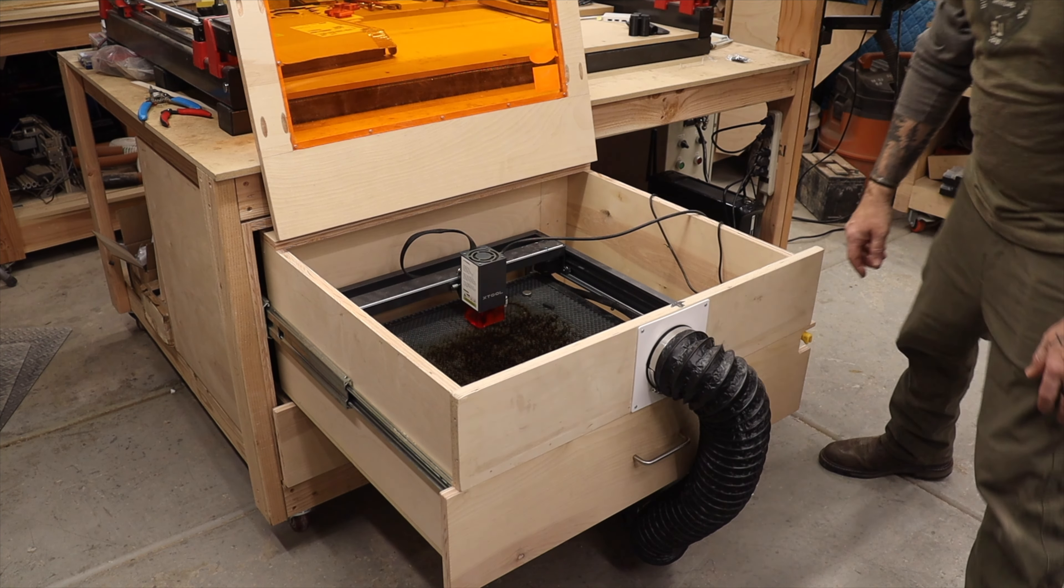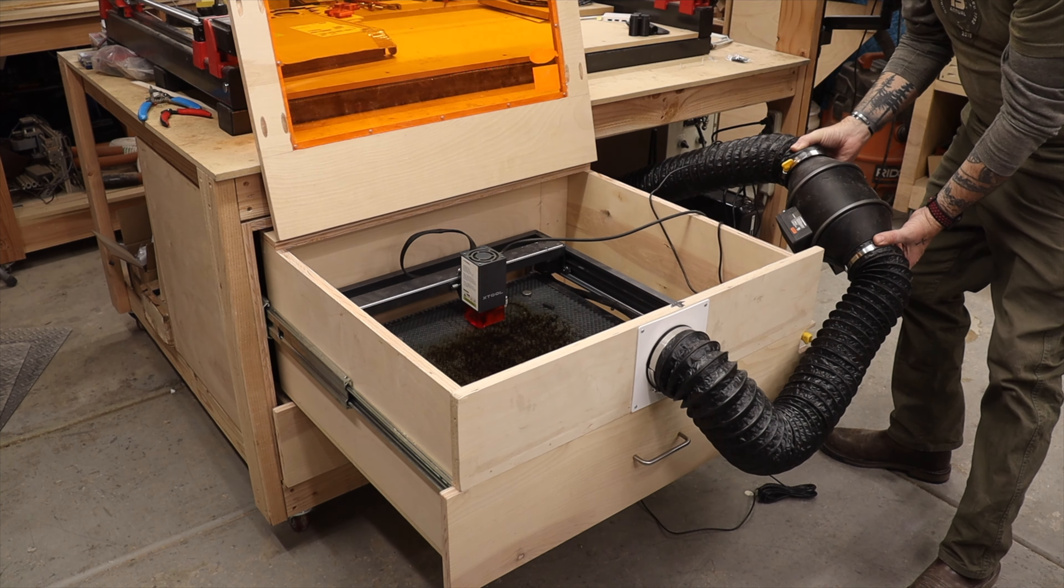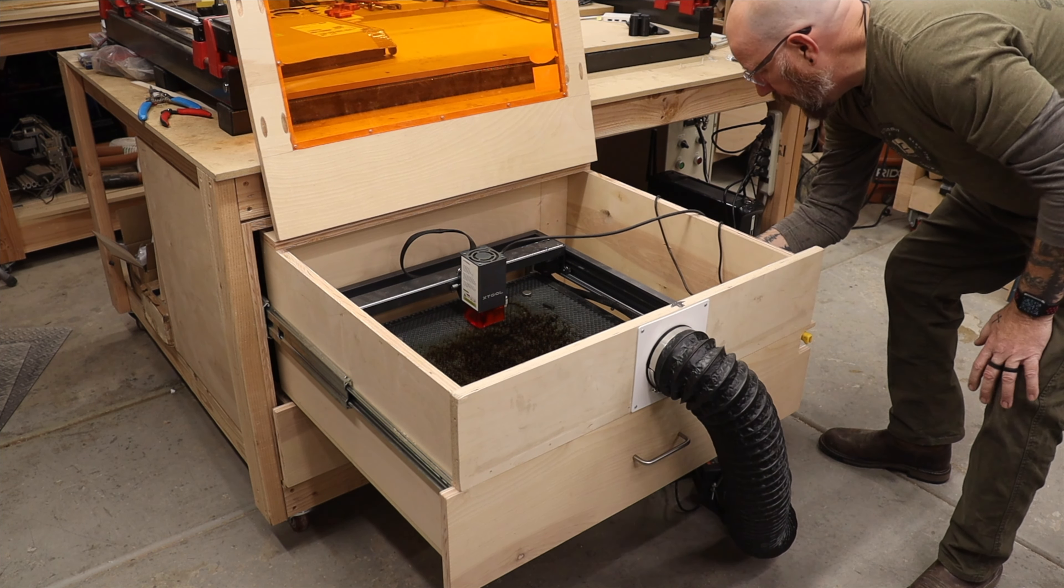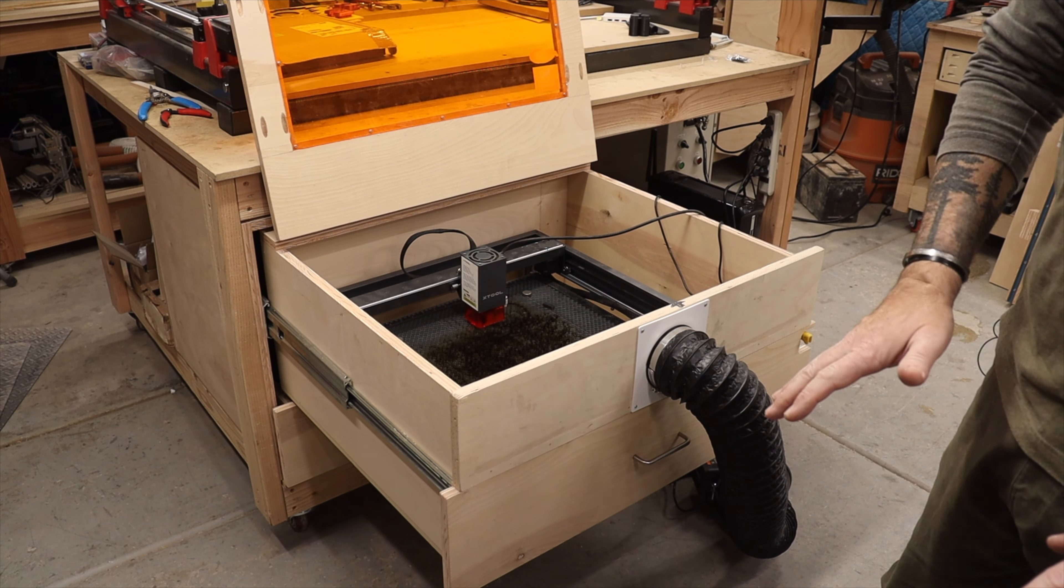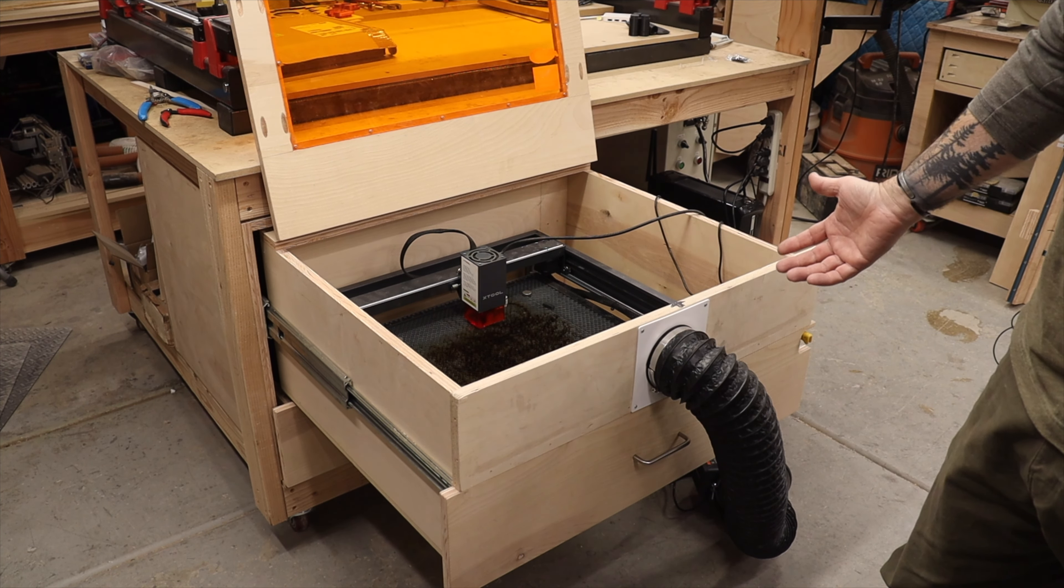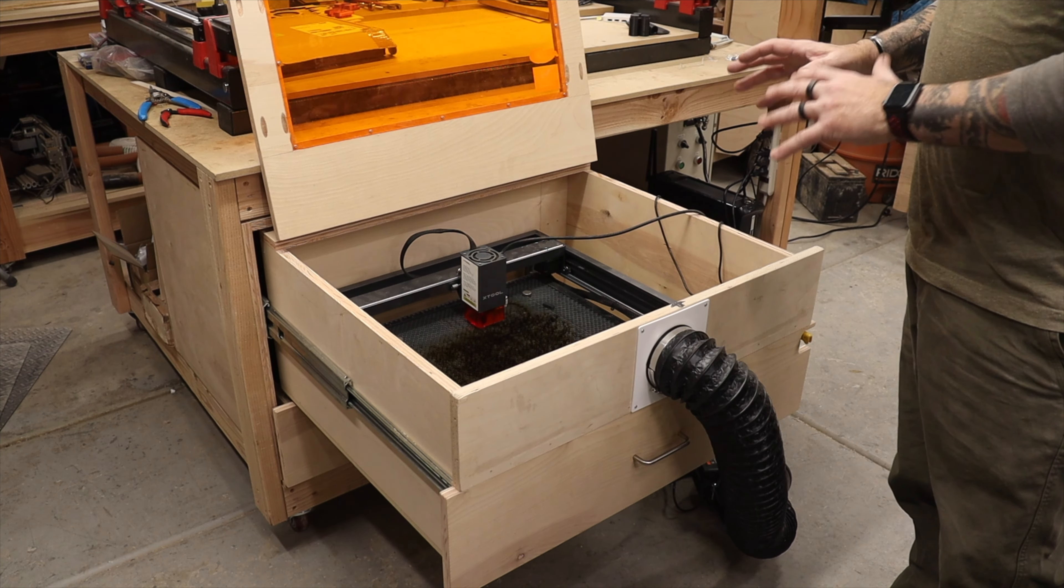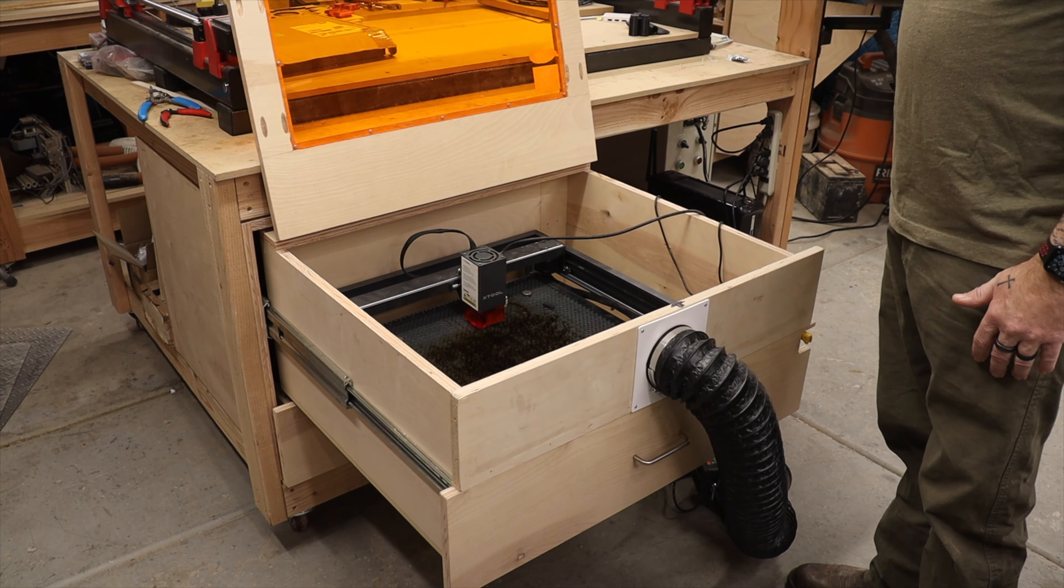And I just put a false front on here, but it's held in by some rare earth magnets. This goes to an inline duct fan. And then I just have the other end going out the garage. It works great at getting the smoke out of here. There's no smoke filling in the shop, so it works perfectly. So this has been a really great setup.